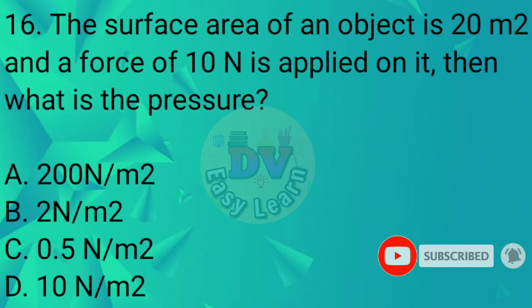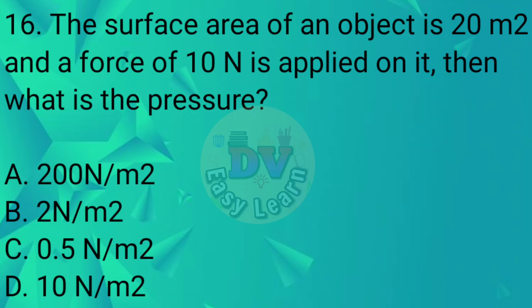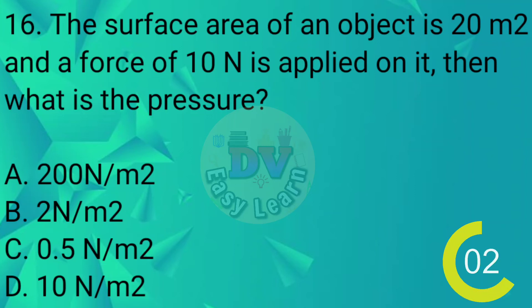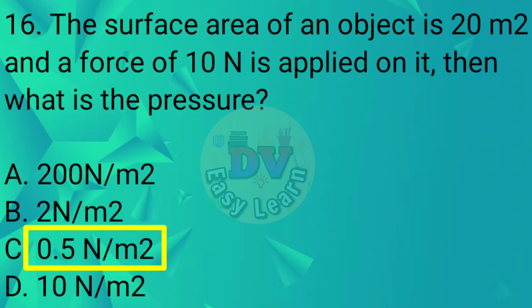Question No. 16: The surface area of an object is 20 meters square and a force of 10 Newtons is applied on it — what is the pressure? Correct answer: 0.5 Newton per meter square, or 1/2 Newton per meter square.